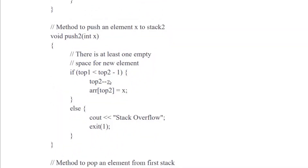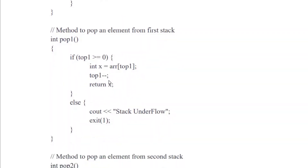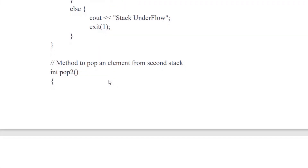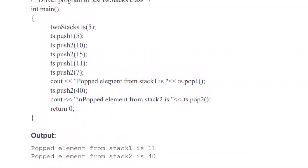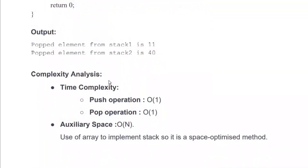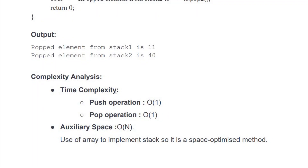When popping an element, if there are elements to pop we return the value; otherwise we print stack underflow — this applies to both stack one and stack two. A test program demonstrates the output of the implementation. For complexity analysis, this algorithm also has O(1) time complexity for each operation, and the auxiliary space is O(n), but unlike the previous approach the array is completely utilized, making it space-optimized.